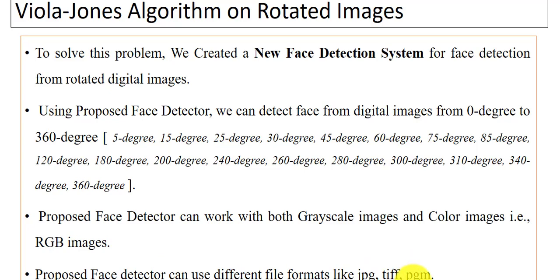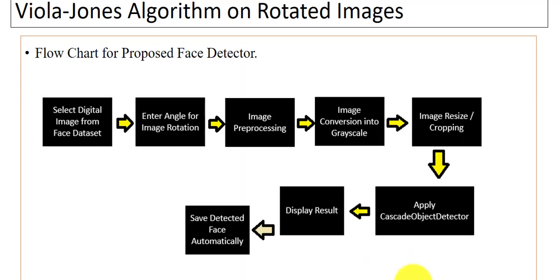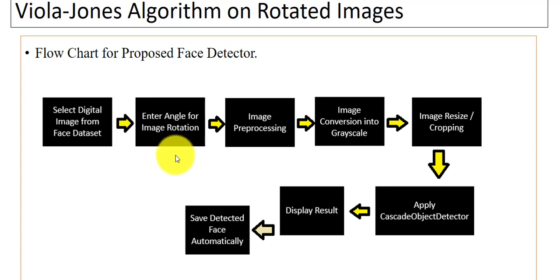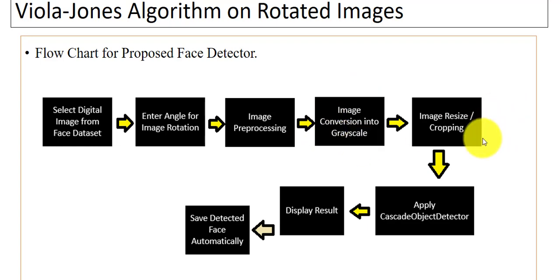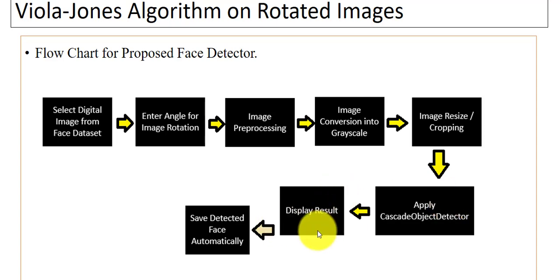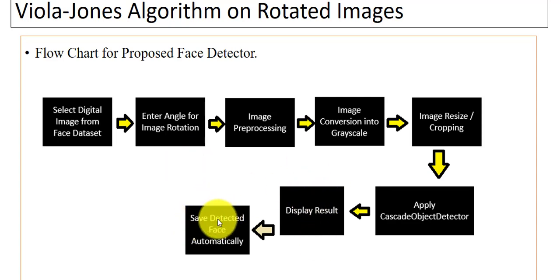This is the flowchart showing the flow process of how the proposed face detector works. First, we select the image from the face dataset. After that, we ask the user to enter any angle for image rotation. Then we apply some image pre-processing operations like conversion into grayscale, image resize. After that, we apply the cascade object detector, show the output image, extract the face from the image, and automatically save it in the device.